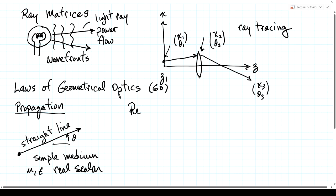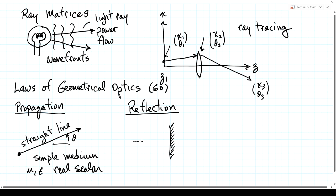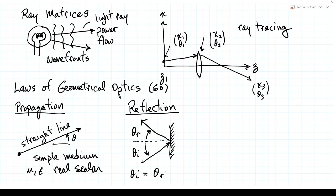The second phenomenon is reflection. If we have a mirror — or more generally, any interface between two simple media — with a surface normal, a ray comes in at angle theta incidence, hits that mirror, and propagates off at angle theta reflected. The law of reflection is that the angle of incidence equals the angle of reflection. We won't use reflection very much in this course.